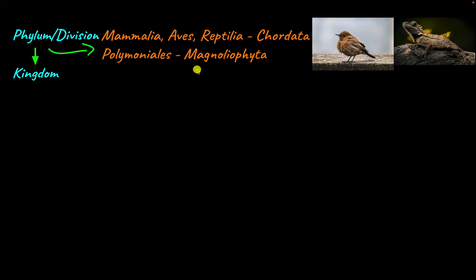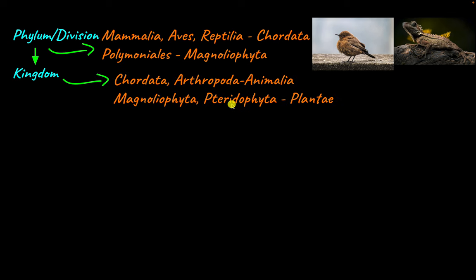The last and final taxon of classification is kingdom, the highest degree of categorization. All animal phyla — the plural of phylum — are classified in the kingdom Animalia. Apart from Chordata, other phyla include Arthropoda, which for example includes insects. All plant divisions are classified under the kingdom Plantae. An organism is classified as an animal if it shares characteristics like eating food and having the ability to move, while organisms are classified as plants if they perform photosynthesis to produce their own food and don't move around.